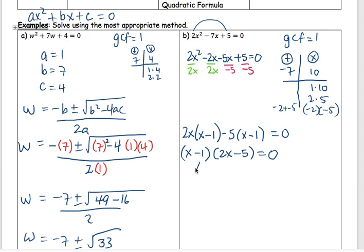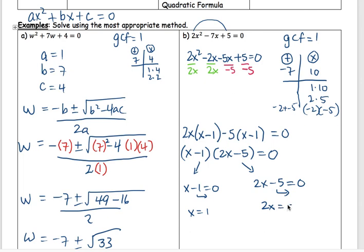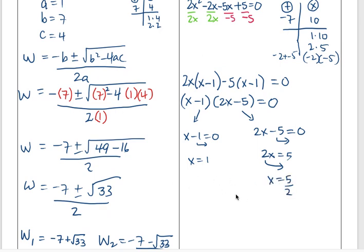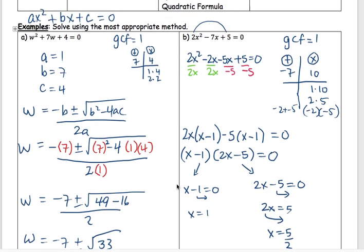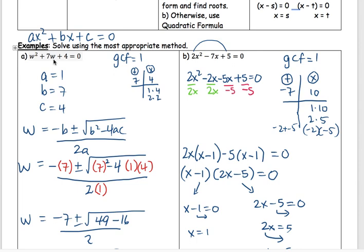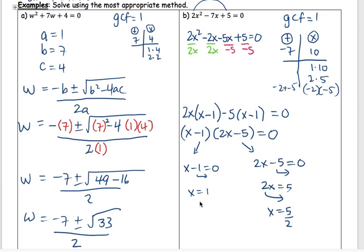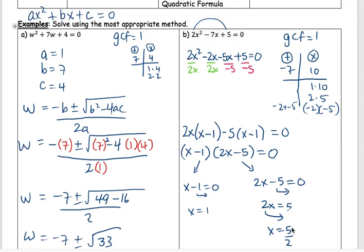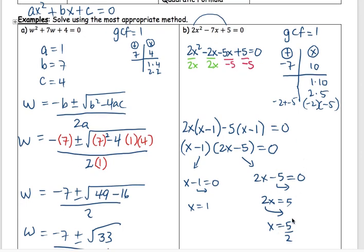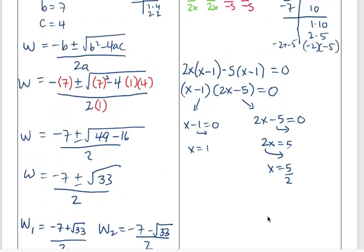To find the roots, equate each factor to zero. For (x − 1) = 0, pop out the opposite sign: x = 1. For (2x − 5) = 0, kick the 5 over to get 2x = 5, then divide by 2 to get x = 5/2. So our two roots are x = 1 and x = 5/2. Plugging x = 1 or x = 5/2 into the original equation gives zero.